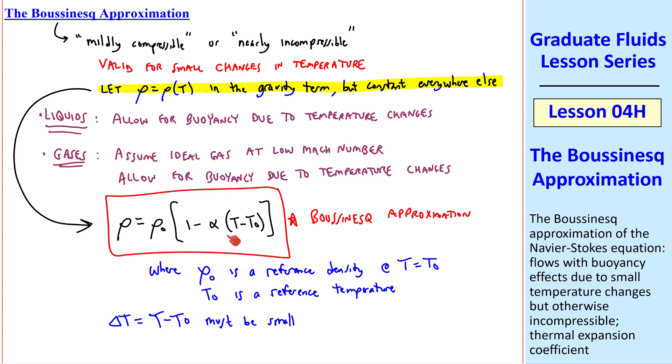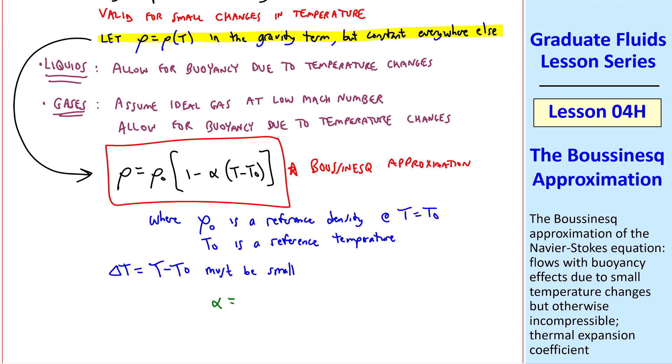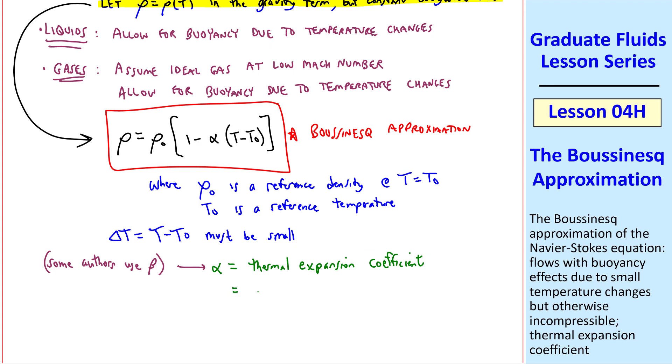As you can see, this is a linear approximation for density. We also define alpha as the thermal expansion coefficient. I should mention that some authors use beta instead of alpha, and some people call this the coefficient of thermal expansion.